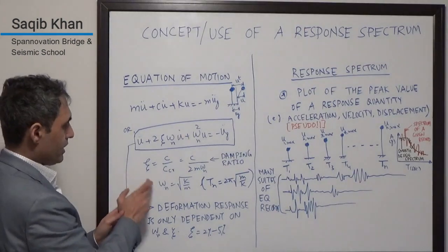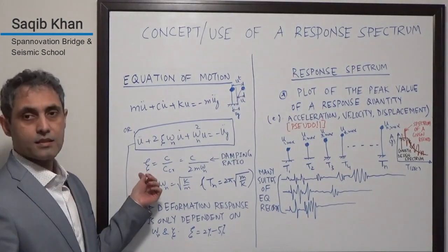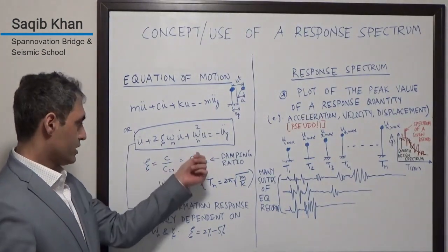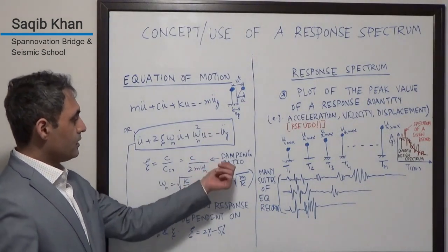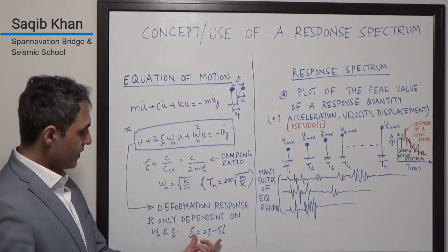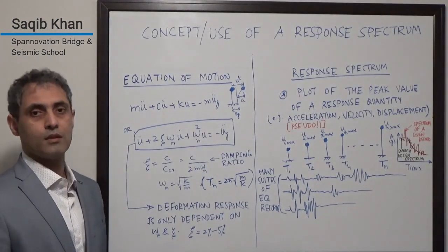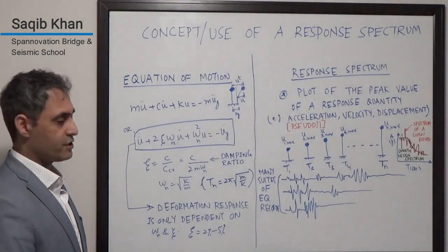We get the C and the omega n. The C is the damping ratio, which is the damping of your system divided by the critical damping. This usually varies from 2 to 5 percent, depending on what type of material you're looking at.